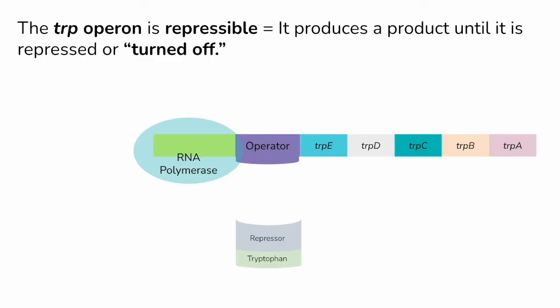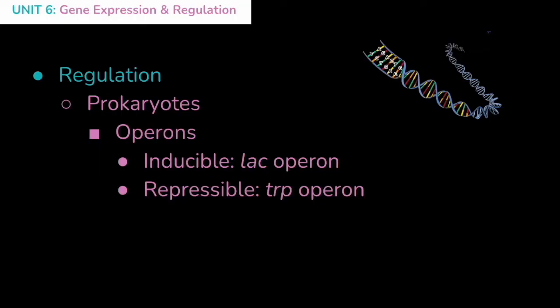But if tryptophan is already present in the cell, we don't need to build proteins to make more tryptophan. So tryptophan will bind to a repressor, which then binds to the operator and prevents RNA polymerase from transcribing the rest of the genes. Remember, operons are a type of gene regulation in prokaryotic organisms, and these groups of genes are transcribed as a single mRNA molecule. We can have both inducible operons — turned on by removing repressors — and repressible operons — turned off by adding repressors.